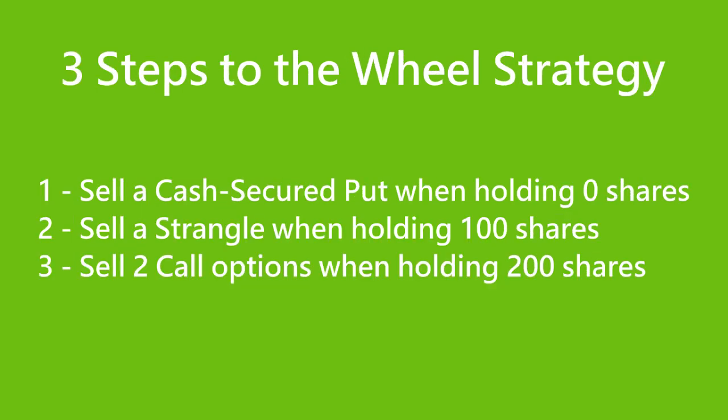The wheel strategy is a sequence of repeatable steps that we can use to combine selling options with holding stocks to buy low and sell high the SPY ETF. The three steps of the SPY option strategy depend on the number of shares you hold. Step one: sell a cash secured put when holding zero shares.